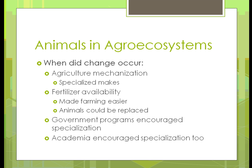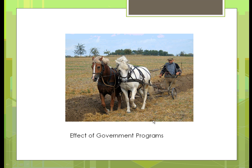Academia also encouraged specialization, believing it would make farmers more money. But because of the rising cost of fertilizers, it's starting to be more expensive for farmers to raise just crops than it used to be. They also lost the self-sufficiency they had — farmers used to have beef cattle, and when they needed meat they'd send a cow to the slaughterhouse and have their meat for whatever time period they needed. Now they have to go out and buy it, so that's an expense they didn't have before. Those types of changes have fundamentally altered the way farming works.